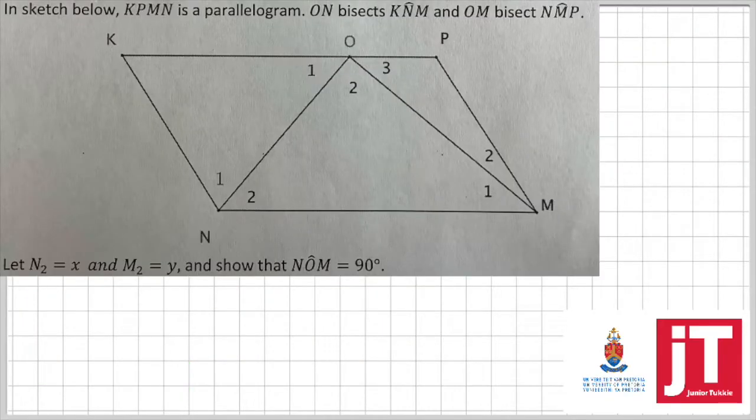In our next question, we are told that, in the sketch below, KPMN is a parallelogram, ON bisects the angle KNM, and OM bisects the angle NMP. Right at the bottom of that diagram, we see that we have been given an instruction to say, let N2 be equal to x, and M2 be equal to y. Show that NOM is 90 degrees.